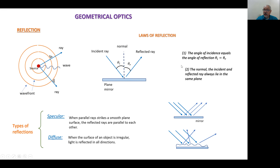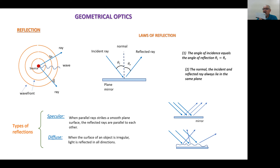The second law: the normal, the incident ray, and the reflected ray always lie in the same plane. They go on the same plane.